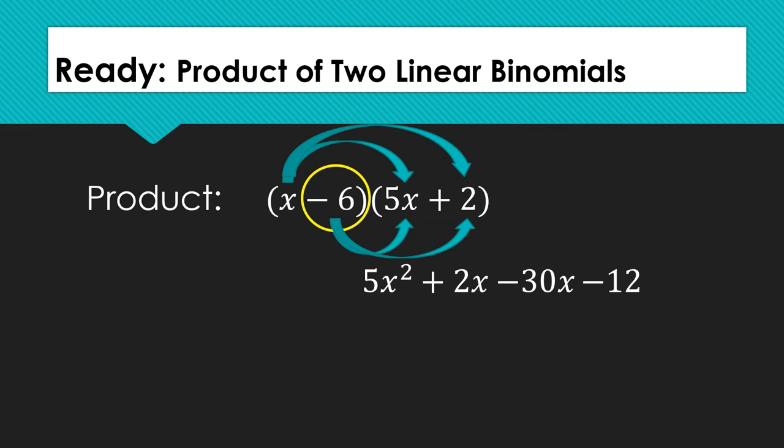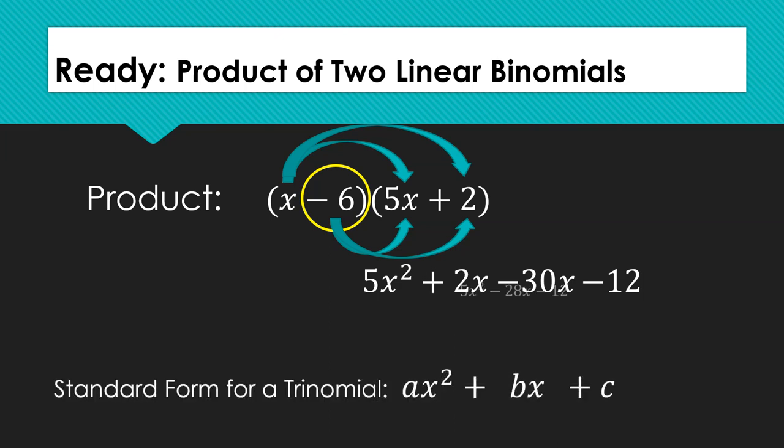Our new expression is now 5x squared plus 2x minus 30x minus 12. Remember that the standard form for the trinomial needs to be written in the form of ax squared plus bx plus c. After we combine our like terms, we are left with 5x squared minus 28x minus 12.